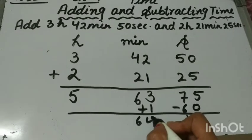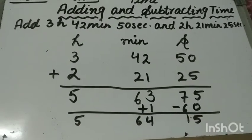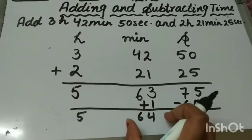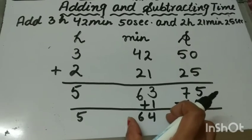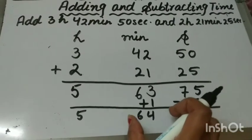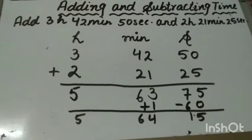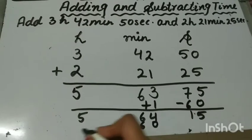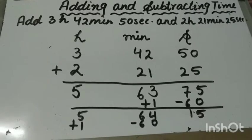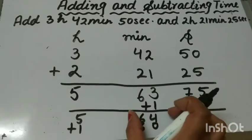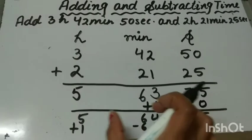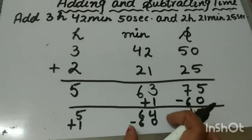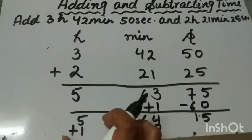So it will become 15 seconds, 64 minutes and 5 hours. The seconds are now okay. Now see the minutes: it's 64 minutes, and 1 hour is equal to 60 minutes. So we will subtract 60 from the minutes and add 1 to the hours — we are converting 60 minutes into 1 hour. We subtract 60 from the minutes part and add 1 to the hours part.